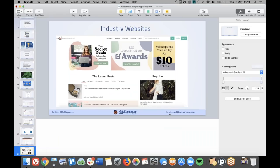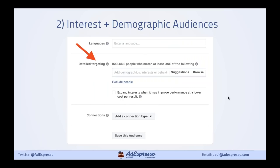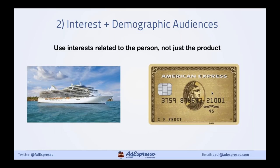We're going to move on now and look at interests and demographics. Once we've got those interests from Audience Insights, keywords, and so on, we can put them into Facebook Ads Manager in the detailed targeting section. Once you put one in, you get a suggestions box and can find extra interests to target. We can also do this in AdEspresso — there's a detailed targeting box and a light bulb icon to get extra suggestions. One key tip about interest targeting: we're finding interests related to that person, not just the product.